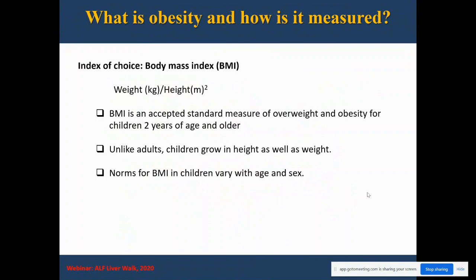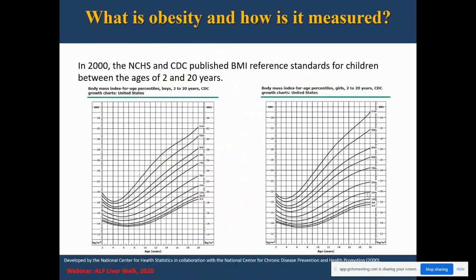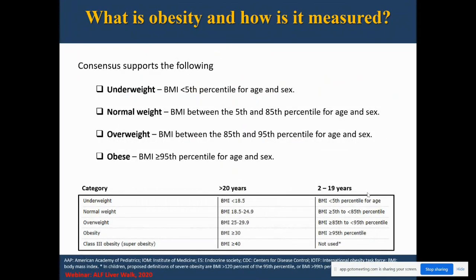Unlike adults, children also grow in height and weight, so BMI in children varies with age. In 2000, the NCHS and the CDC published BMI reference charts for children between 2 and 20 years of age for both boys and girls. The consensus supports: underweight is BMI less than the 5th centile; normal weight is between the 5th and 85th centile for age and sex; overweight is between the 85th and 95th centile; and obese is greater than the 95th centile for age and sex.